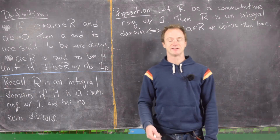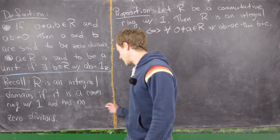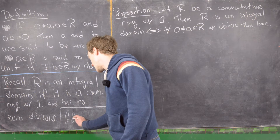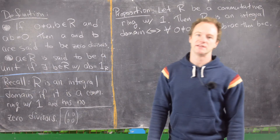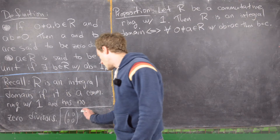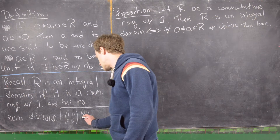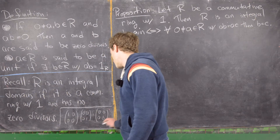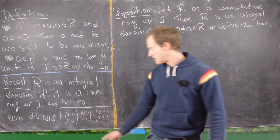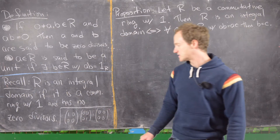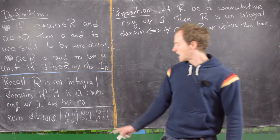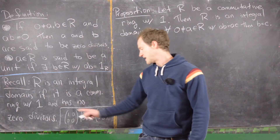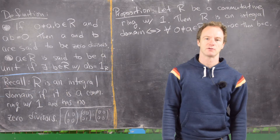You can also get zero divisors in the world of matrix rings, and those are pretty easy to find. For example, take the matrix [1 0; 0 0] and multiply it by [0 0; 0 1], and you'll get the zero matrix — making both of these matrices zero divisors.